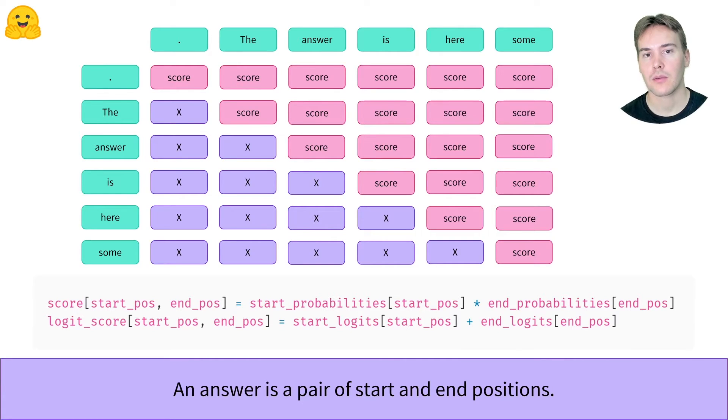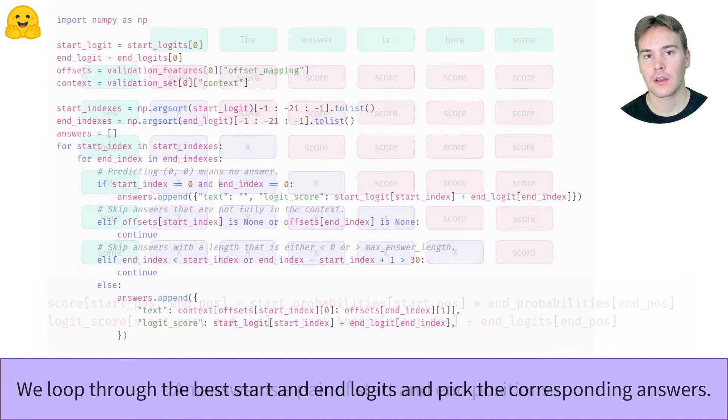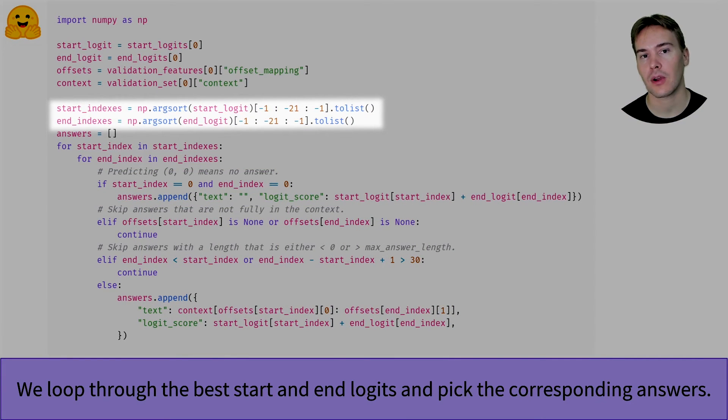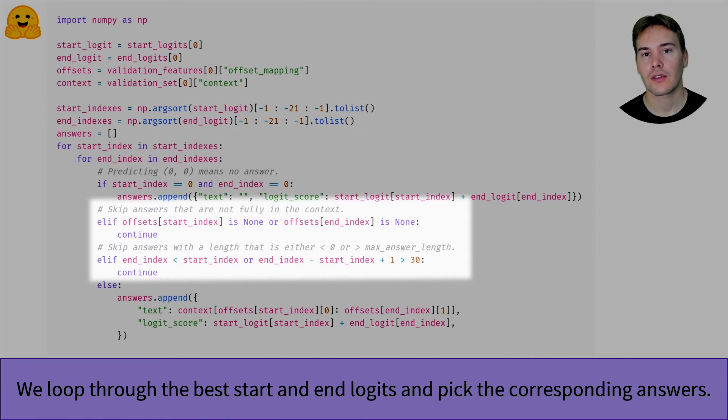Note that in the question answering pipeline, we attributed a score to each answer based on the probabilities, which we did not compute here. In terms of logits, the multiplication we had in the scores becomes an addition. To go fast, we don't look at all possible start and end logits, but the 20 best ones. We ignore the logits that spawn impossible answers, or answers that are too long.